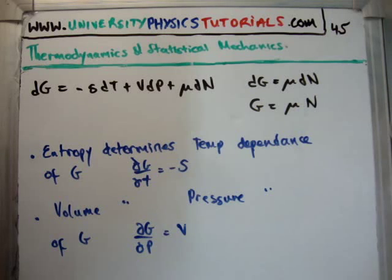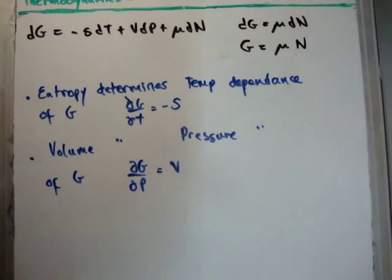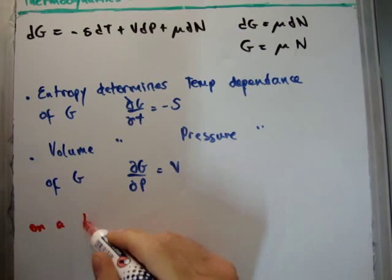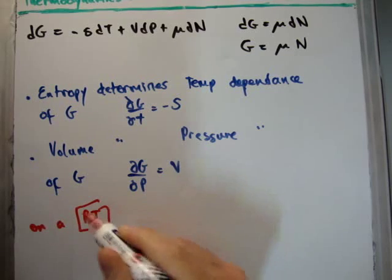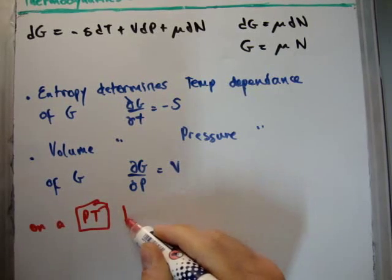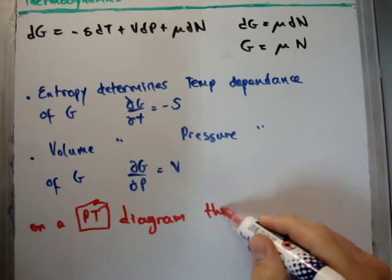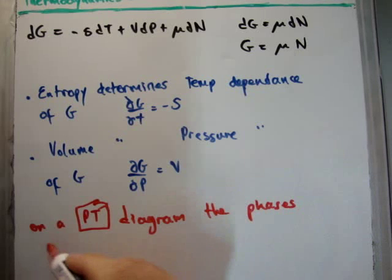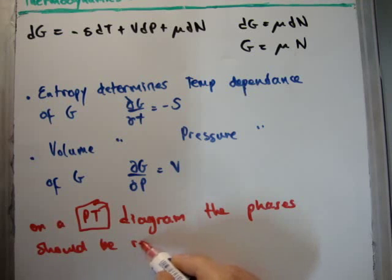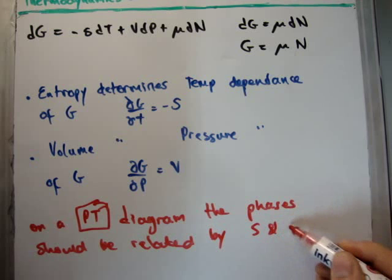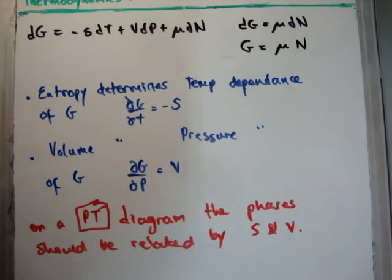So where do we go from here? This suggests that on a PT diagram the phases should be related by S and V. So what are the phases? We're talking about the solid phase, the liquid phase and the gaseous phase.